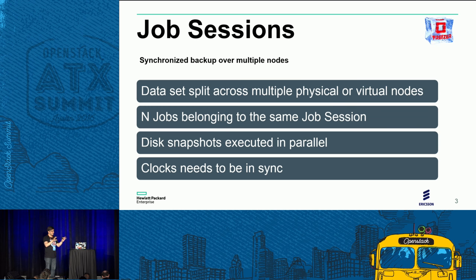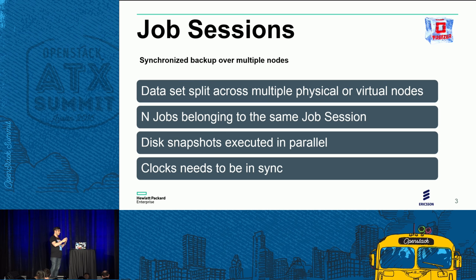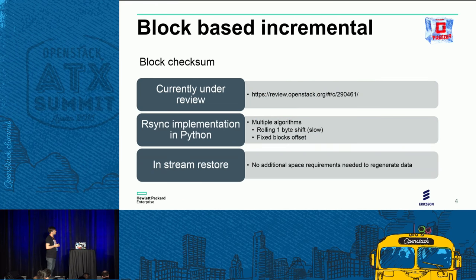After the snapshot on the file system is taken with the most reduced time window, we have a point-in-time data snapshot. Then all the Freezer agents on multiple nodes can take the backup, all belonging to the same job session.